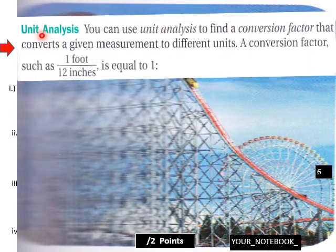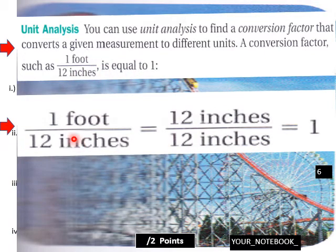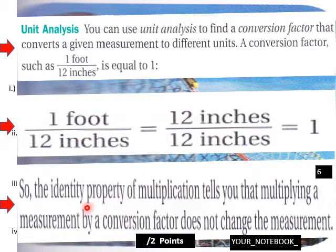Now let's go to a notebook page: Unit Analysis. You can use unit analysis to find a conversion factor that converts a given measurement to different units. A conversion factor such as one foot over 12 inches equals one — because one foot is 12 inches, that fraction equals one. The identity property of multiplication tells you that multiplying a measurement by a conversion factor does not change the measurement; you're basically multiplying by one.